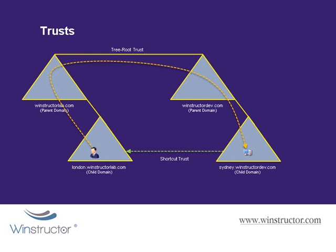Shortcut trusts can either be one-way or two-way. So if we configured a one-way trust between London and Sydney, whilst users in London can access resources in Sydney directly, the users in Sydney will have to go the long way around and traverse the domain trees if they want to access resources in the London domain. So if both parties need access to each other's domains on a regular basis, a two-way shortcut trust would be the better option.